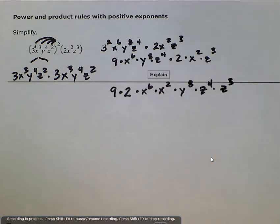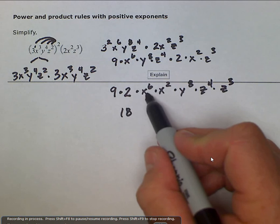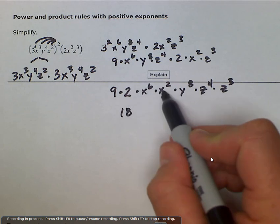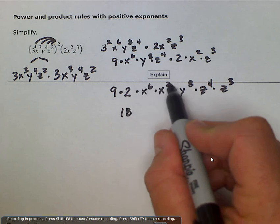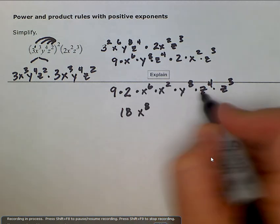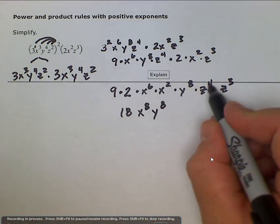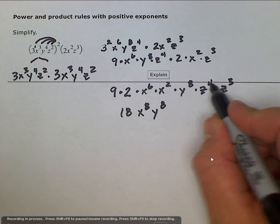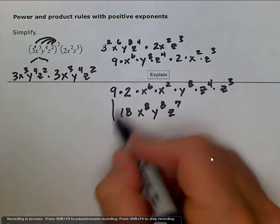And now we just have to resolve this. Well, nine times two is just 18. And then our product rule comes into play. x to the sixth times x squared, when we have like bases and we're multiplying them, we add our exponents. Six plus two is eight. We only have one y, so that stays the same. And then z to the fourth times z to the third, four plus three is seven. And this is our final answer.